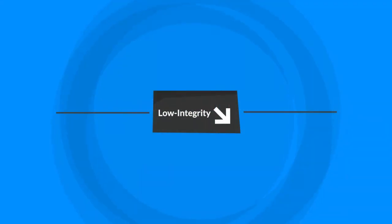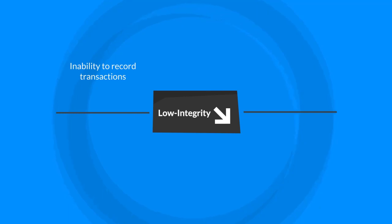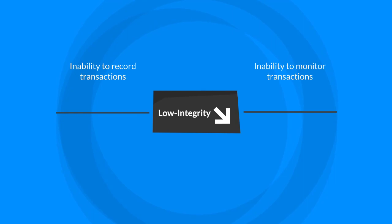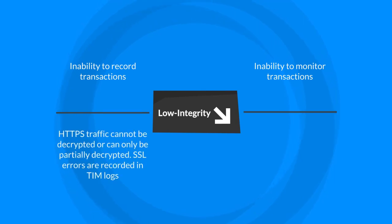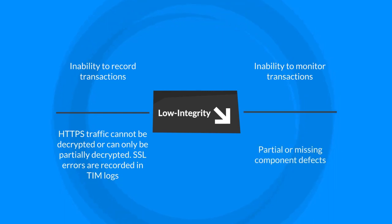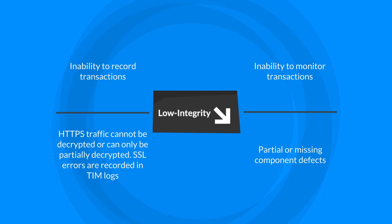You can see the following problems when the traffic forwarded to the TIM is of low integrity: inability to record transactions, inability to monitor transactions, HTTPS traffic cannot be decrypted or can only be partially decrypted, SSL errors are recorded in TIM logs, and partial or missing component defects fill the incidents at a tremendous speed. When the TIM reports these defects during peak times, the mirrored port equipment is probably overloaded and drops traffic.